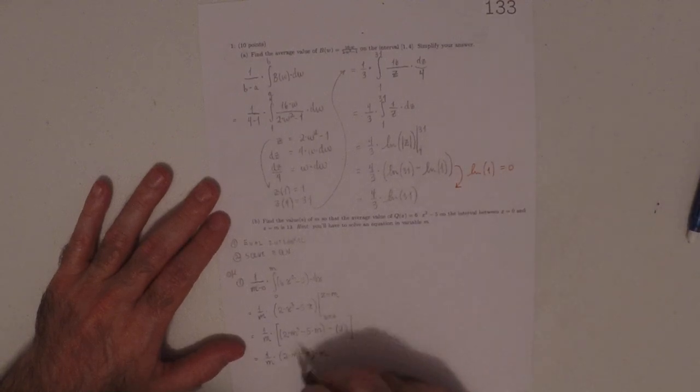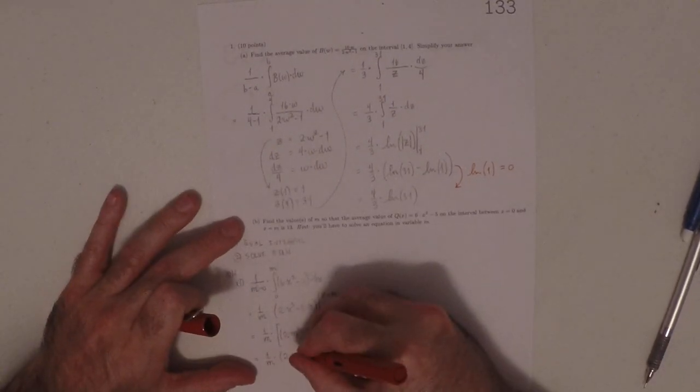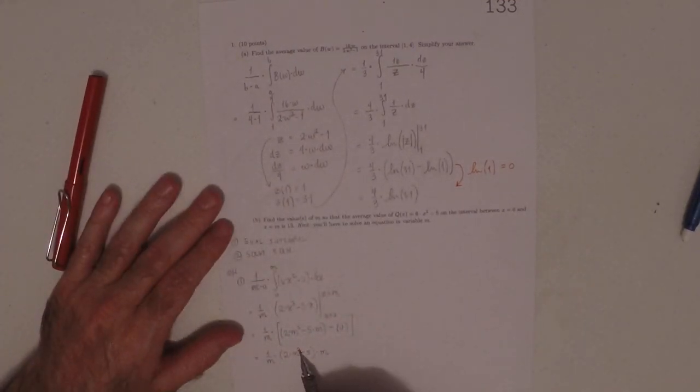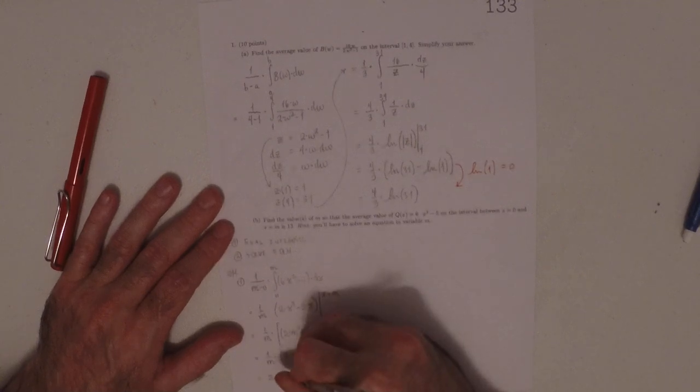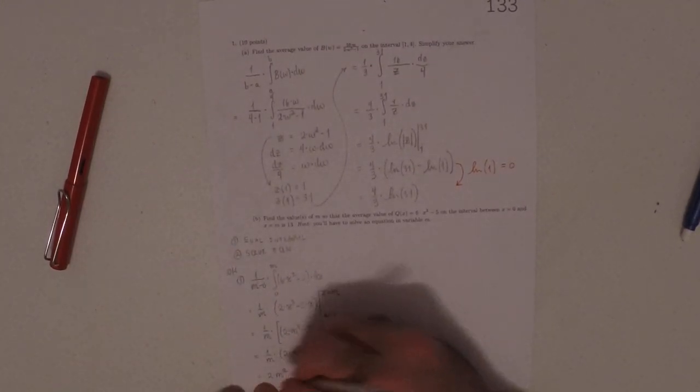Oh wait a second, not too many of them. So this is 2m squared. Yeah, that's better. Almost left that out there. So now those m's cancel. So 2m squared subtract 5. So this is the average for a given m.